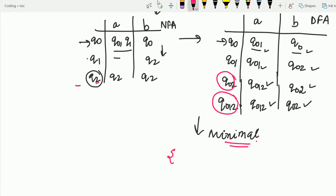So first of all, divide the states, non-final states into one set and the final states into another set. So we are making. These are non-final states and for the final states that is Q02 and Q012 into another.